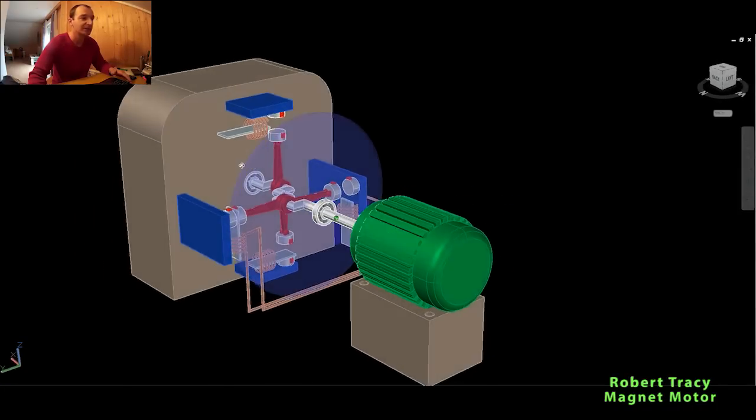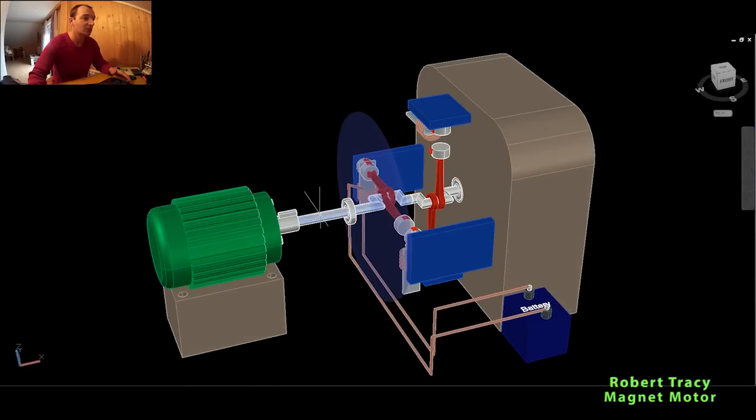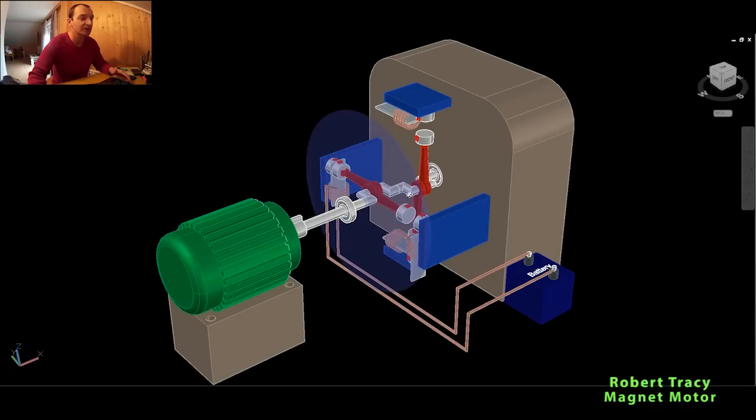That's the whole Robert Tracy permanent magnet machine with this mechanical system, which is connected then via the shaft to the classical generator which produces current.